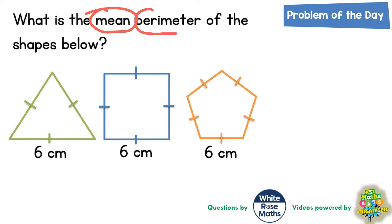We're actually testing two different skills here: the mean and the perimeter. Now mean is another word for average, it's a type of average.